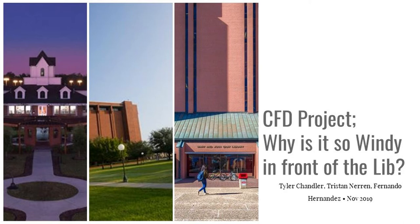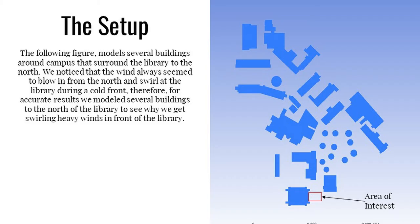The wind in front of the library is always gusting and blowing very hard, and we wanted to know why, since there seems to be so many buildings to the north of the library, and that's where the wind comes from and normally blows in Beaumont. So it's very interesting to see why it is so windy in front of the library.